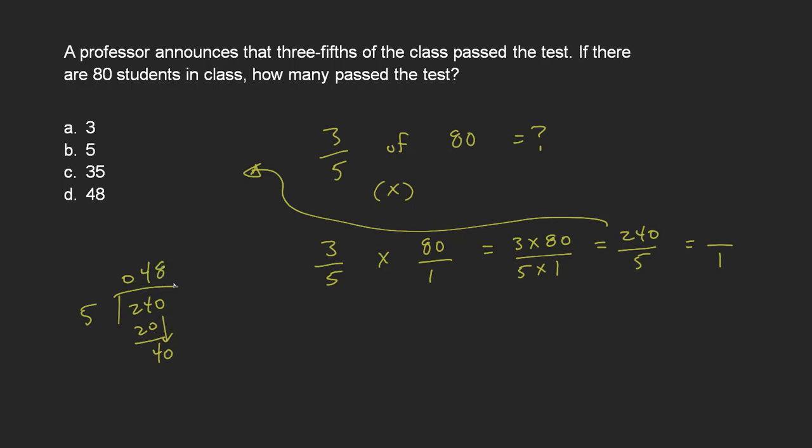So my answer is 48 over one. But like I said, over here, any number is able to be made into a fraction by just putting it over one. By the same token, 48 over one is just 48.